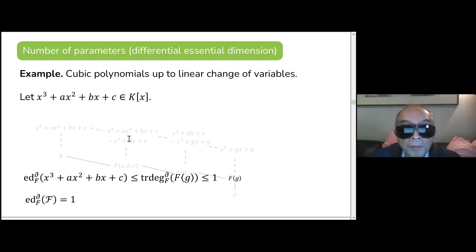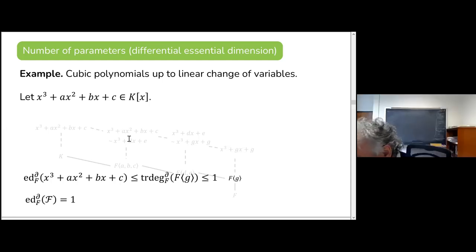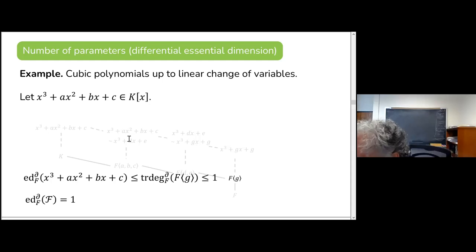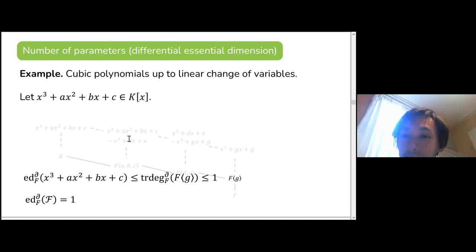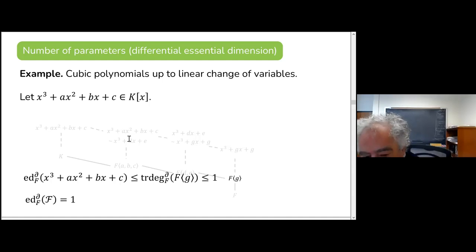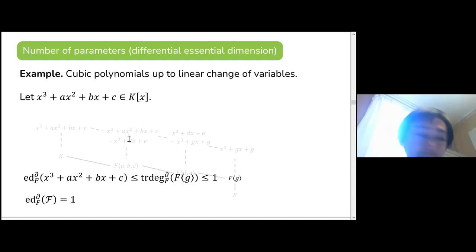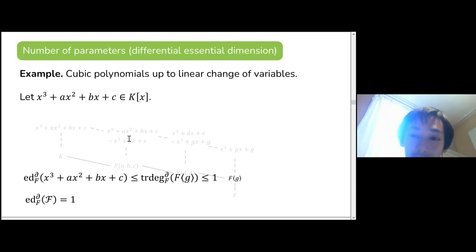An audience member notes: you have a bunch of objects with some notion of equivalence, and there's a moduli space of equivalence classes, so the differential essential dimension is something like the dimension of the moduli space — if the moduli space exists. The speaker confirms this is the abstract point of view: you're trying to measure an approximate notion of the moduli space, even when the moduli space might not exist.